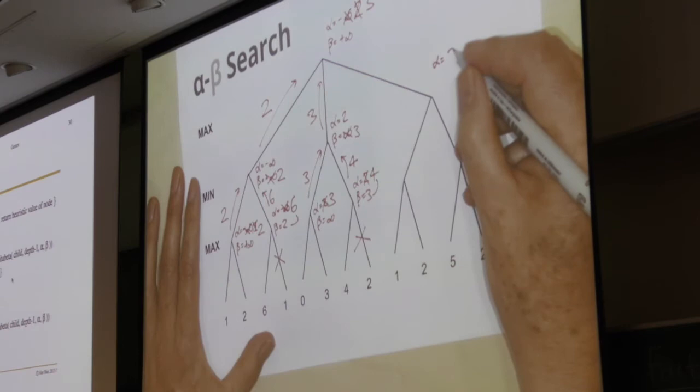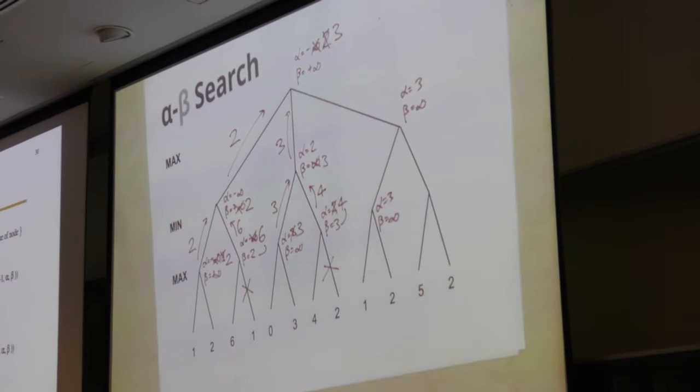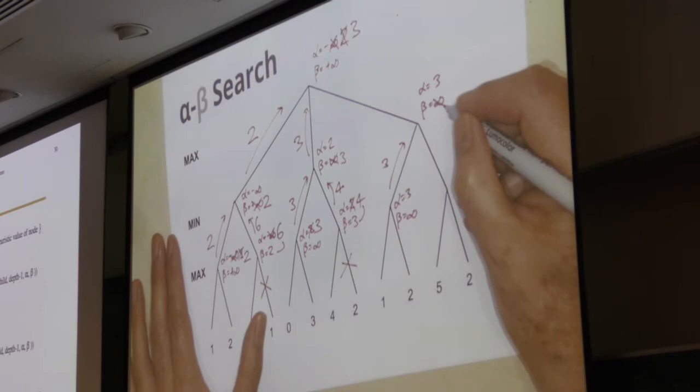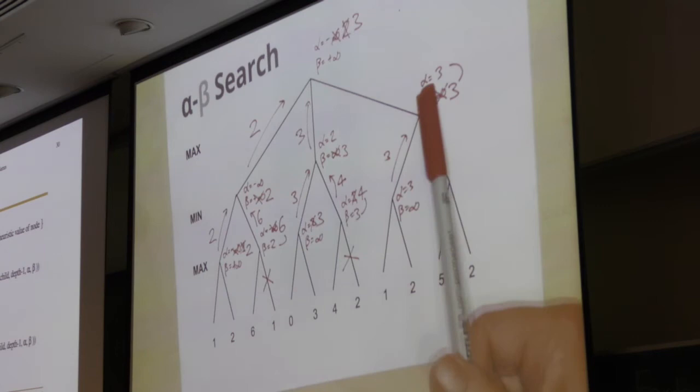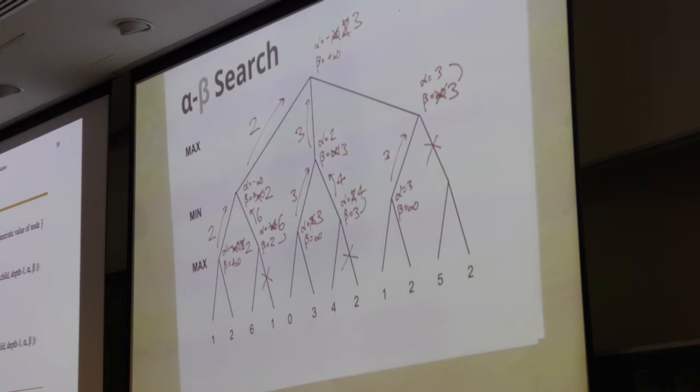Then we go down again, alpha is three, beta is infinity. Now here, one is not as good as three, two is not as good as three, so the three goes back up the tree. Beta becomes three. Now this is an important point. If it's equal, that's good enough to cause a cutoff. It actually says less than or equal to. So this part gets pruned off, and that's it.